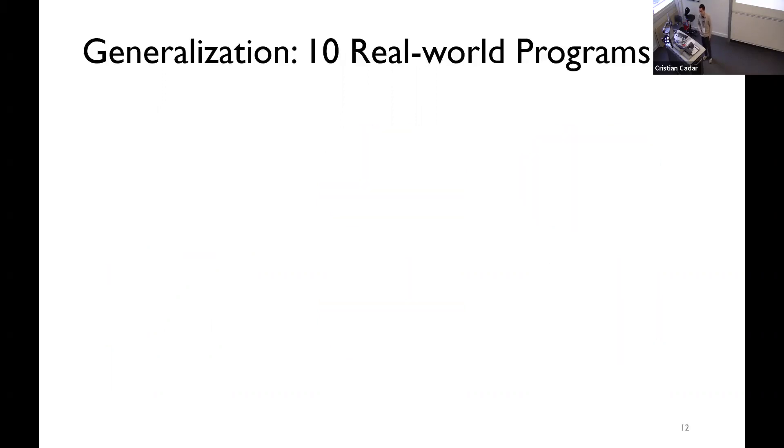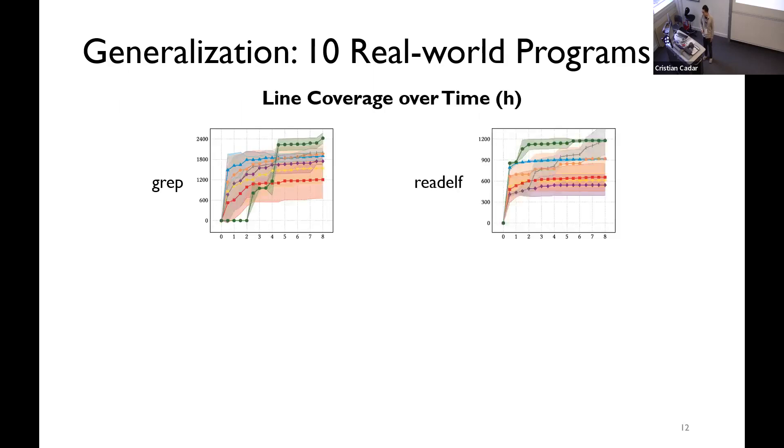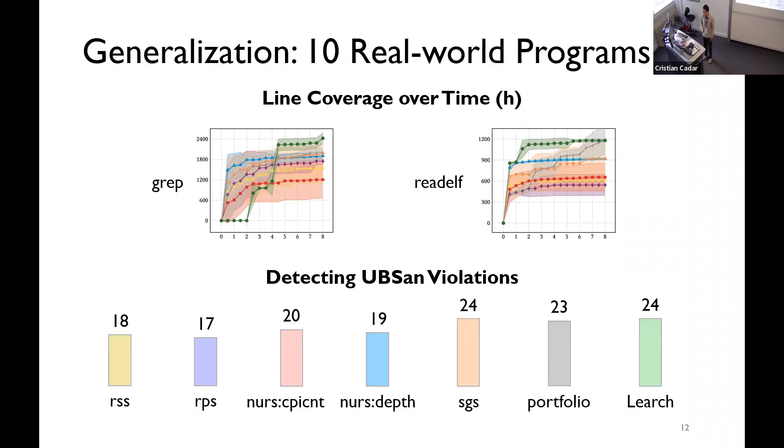The second evaluation is done on 10 real-world programs that are not from COREUTILS to measure generalization to other programs that are different from the training set. We use eight-hour time limit. I show two programs here. The green one is NERJ. The shaded area is the standard deviation across multiple runs. And, the others are the baselines. And, also, try to detect undefined behavior sanitizer violations. Also, NERJ is at least equal to existing strategies.